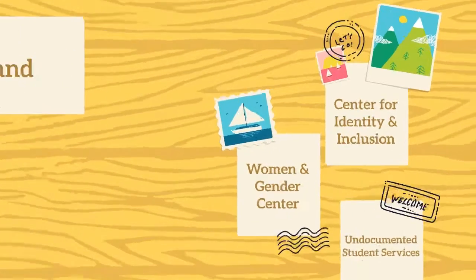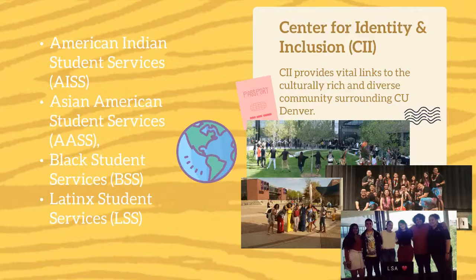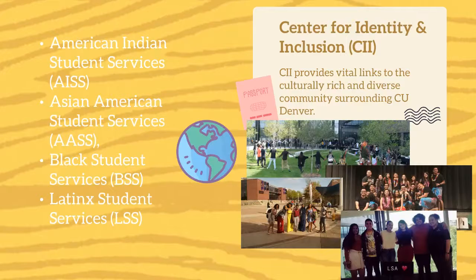First up is the Center for Identity and Inclusion. The Center provides vital links to the culturally rich and diverse communities surrounding CU Denver. Its main goals are to support underrepresented students and to promote a diverse and inclusive campus for all students, faculty, and staff. There are four branches: American Indian Student Services, Asian American Student Services, Black Student Services, and Latinx Student Services.